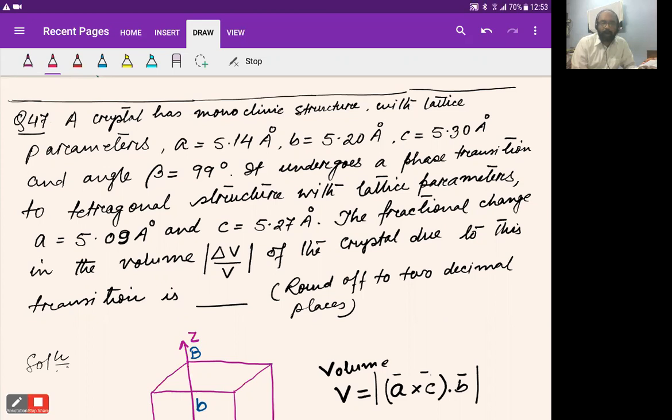β = 99°. It undergoes a phase transition to tetragonal structure with lattice parameters a = 5.09 Å and c = 5.27 Å. The fractional change in volume ΔV/V of the crystal due to this transition